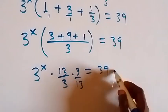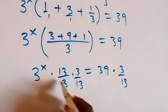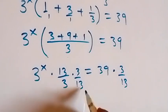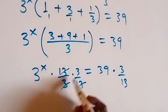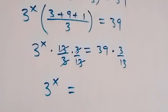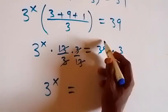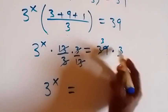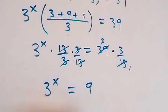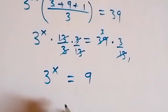So, multiply with 3 over 13 on both sides in order to remove this. 13 cancels with 13, and 3 cancels with 3. We are left with 3 raised to power x here, which is equal to 3 times 3, which is 9. And also, we can write 9 as 3 squared.